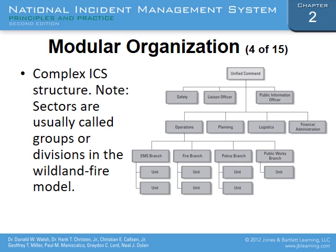Looking at the operational org chart, for this particular incident there is an EMS Branch, a Fire Branch, a Police Branch, and a Public Works Branch. Below each branch are individual units assigned specific tasks. This is a good example of how the org chart works and who reports to whom. Ultimately, all objectives come down from the Unified Command or Incident Commander at the top.